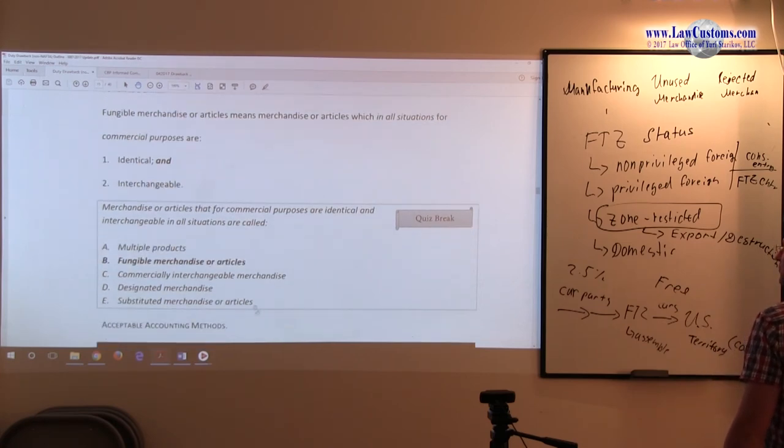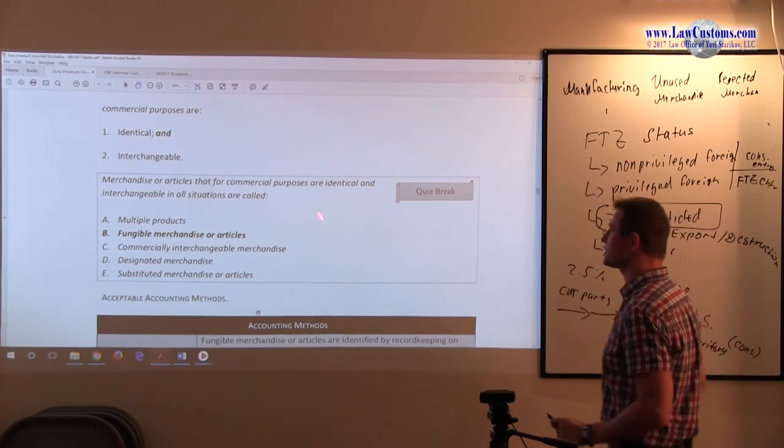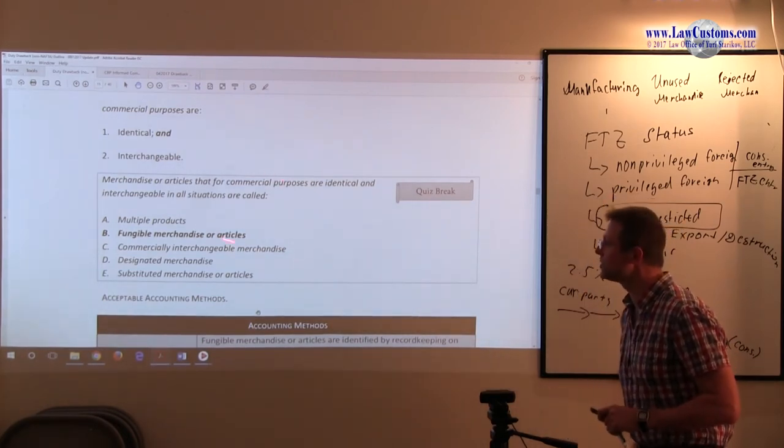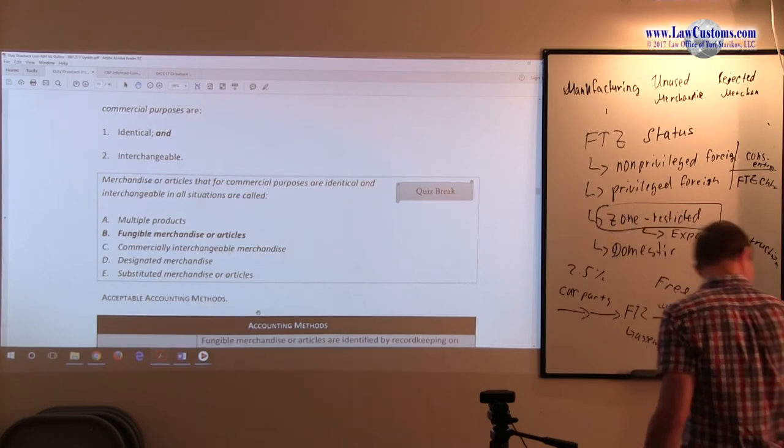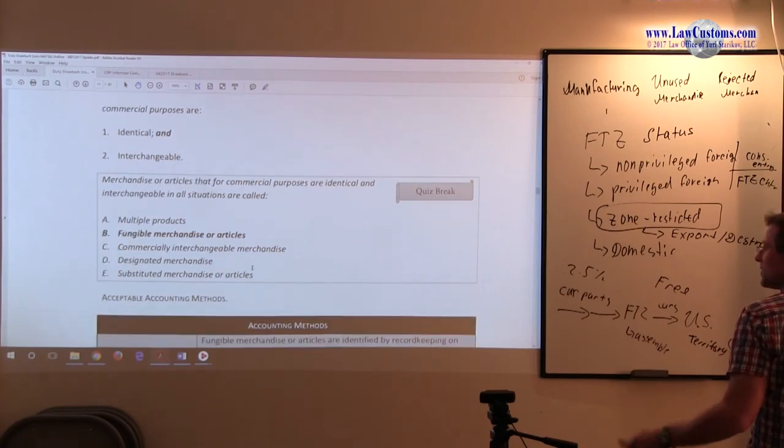Exam question. Merchandise or articles that for commercial purposes are identical and interchangeable in all situations are called. And the buzzword is fungible. Fungible. So, B is the correct answer here.